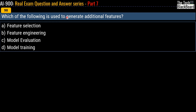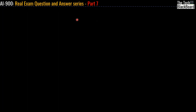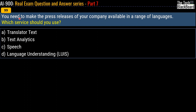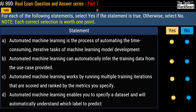Question 98: which of the following is used to generate additional features? Options are feature selection, feature engineering, model evaluation, or model training. The correct answer is feature engineering. Question 99: you need to make your company's press releases available in a range of languages — which service should you use? Options are translator text, text analytics, speech, or language understanding. The correct answer is translator text.